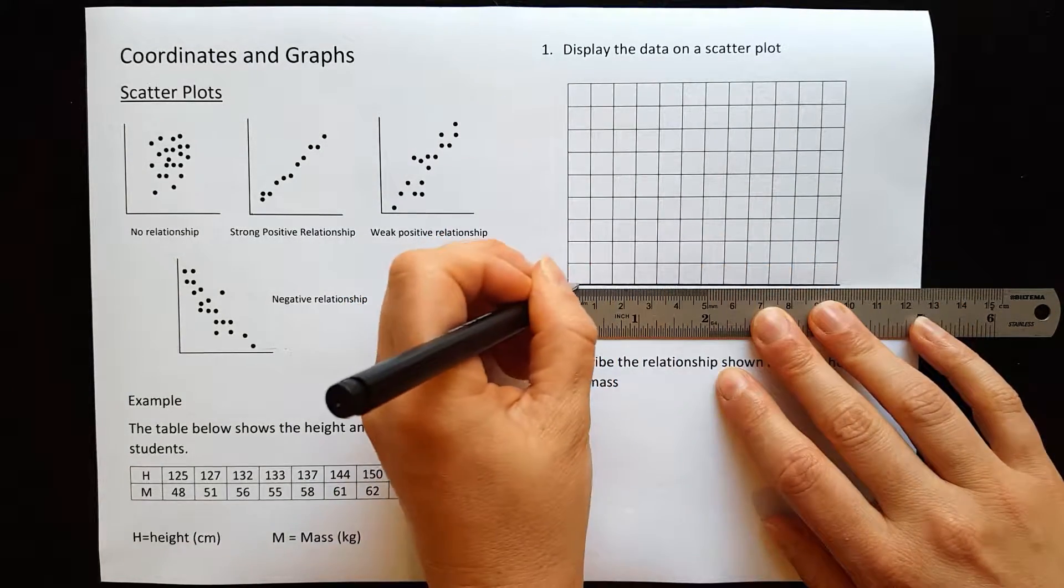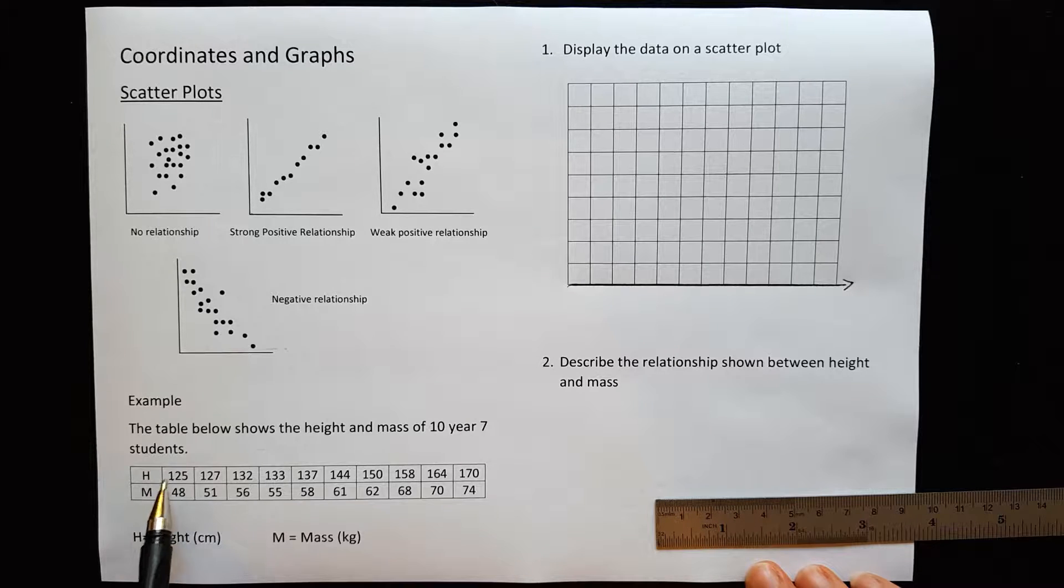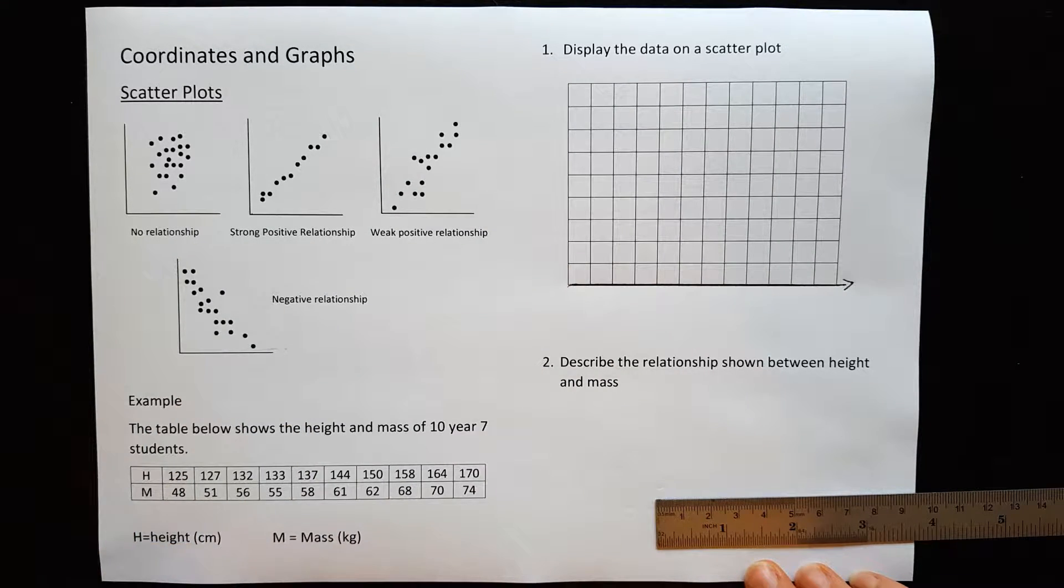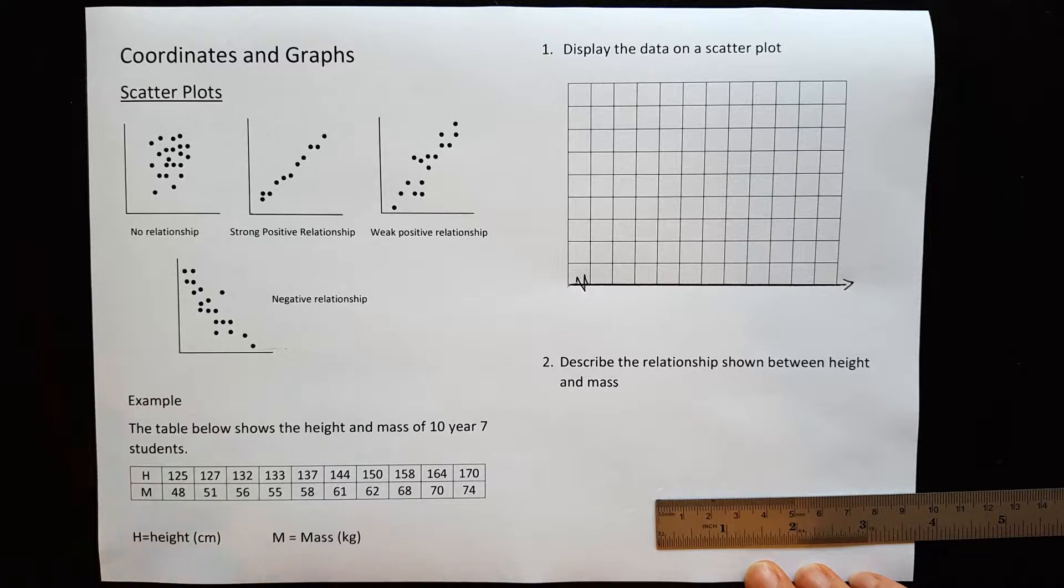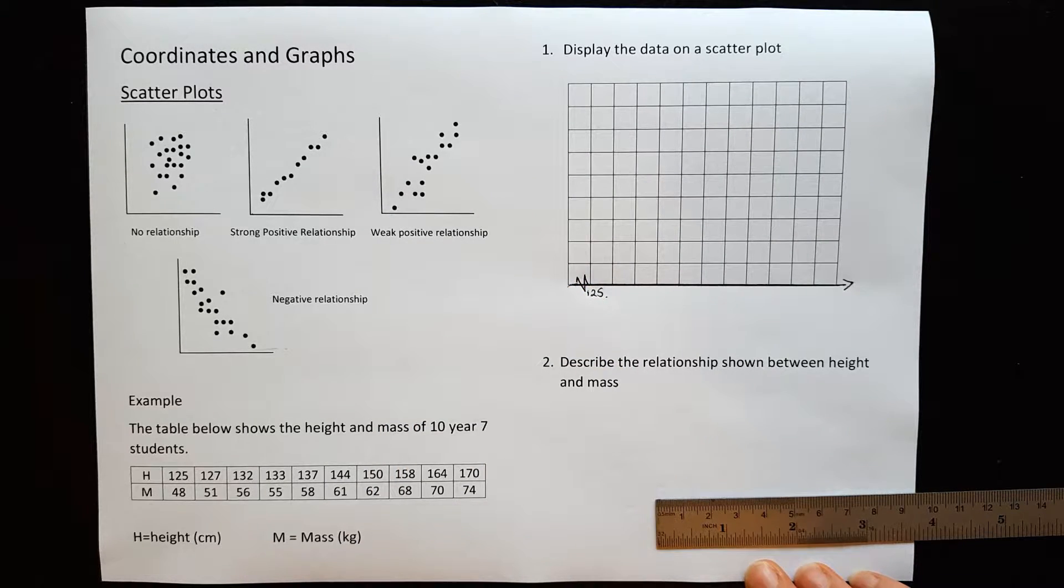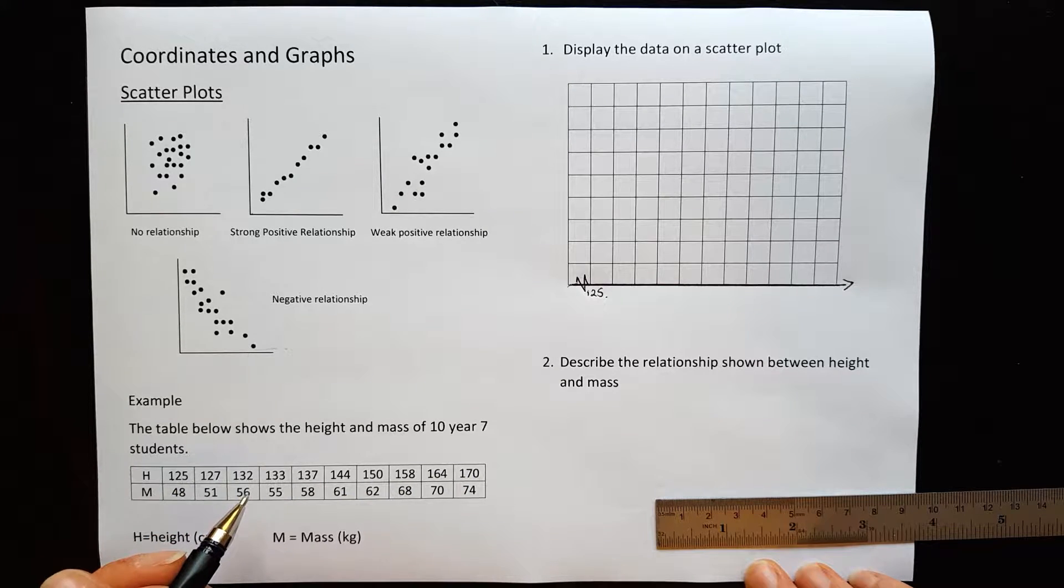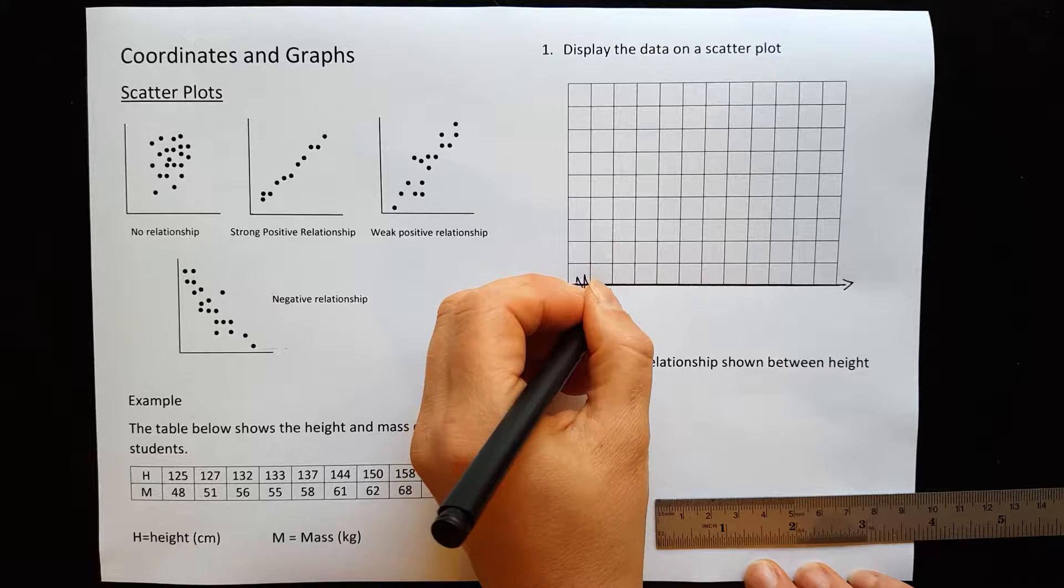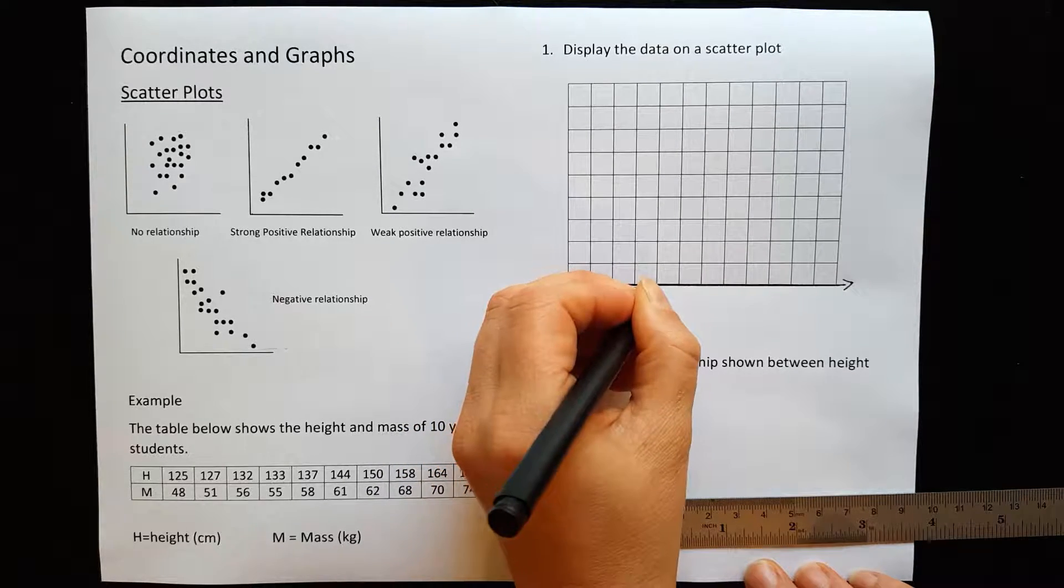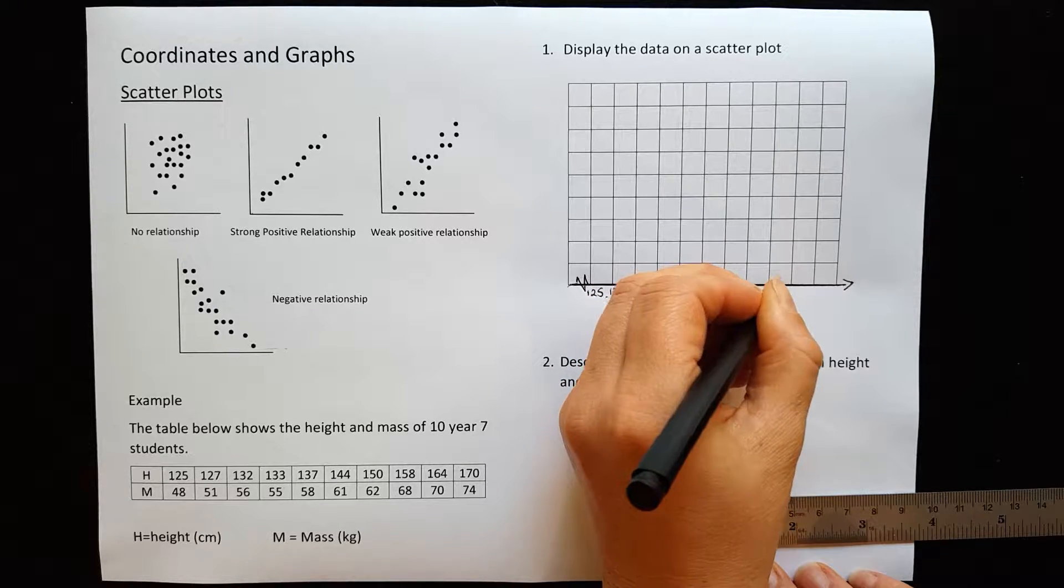So let's draw a line across the bottom. Now we don't want to have to start our numbers at 125 because that would squish our graph up and we wouldn't be able to see our results very well. So what we can do if we have a big jump from zero like that, we can do a little zigzag line on our axes to indicate that we're going to skip some of the numbers and start at our smallest number which is 125. Then going up by 5, that would make 130, 135, 140, 145, 150, 155, 160, 165, 170.